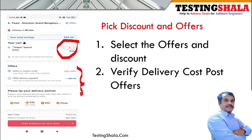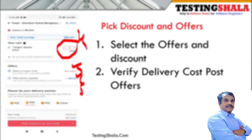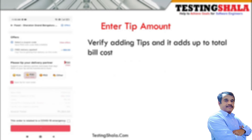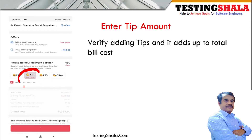After selecting items, there is also an offers and discounts section. When we select an offer, we should appropriately get a discount from the total cost. There is also a delivery location to choose, where GPS will identify the location and we should be able to select it and enter the right address.